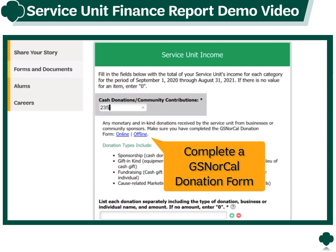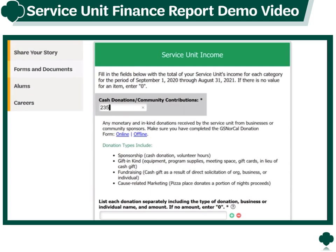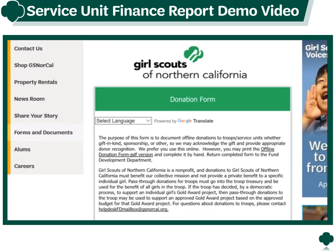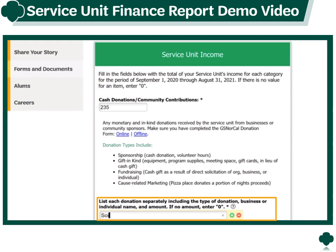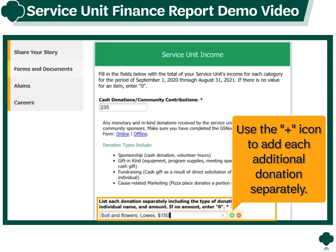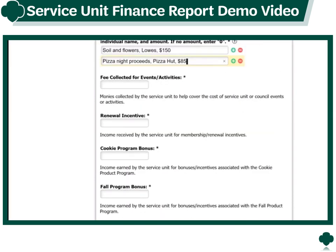Make sure you have completed the GS NorCal donation form. It's available as an online form or an offline downloadable version. List each donation separately including the type of donation, business or individual name, and amount.